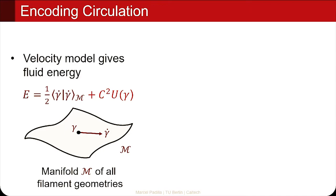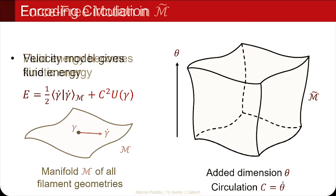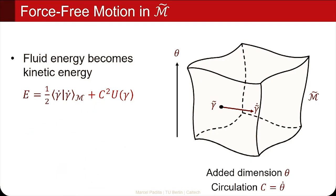We could stop here and try to find a different way, or we can do something radical in order to get the kinetic energy encoded the way we want. The second term does not have a time derivative in it, but we want it to be a time derivative. So what we do is take our manifold M and extend it by some carrier dimension theta that carries the circulation in its derivative. By doing this, we can manage to describe the same fluid energy as a kinetic energy, because we can find a scalar product that fulfills this equation.